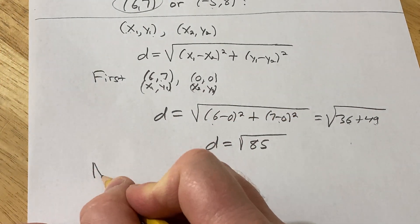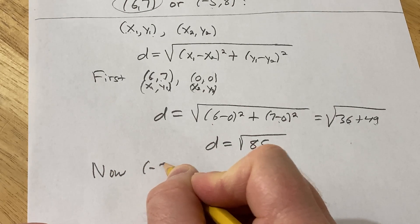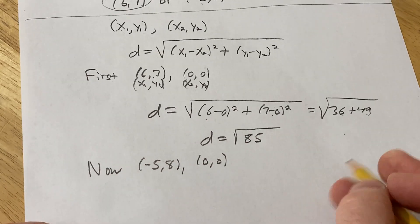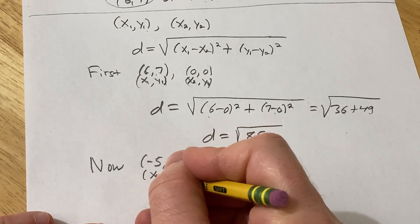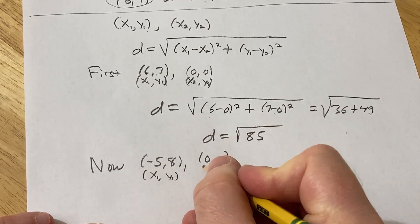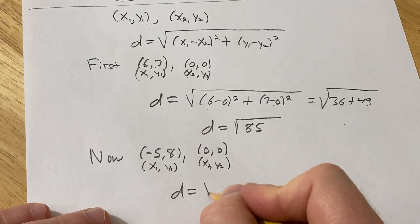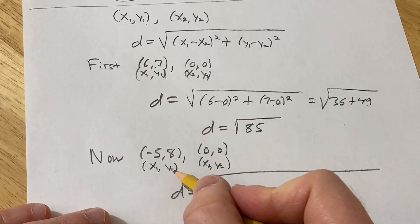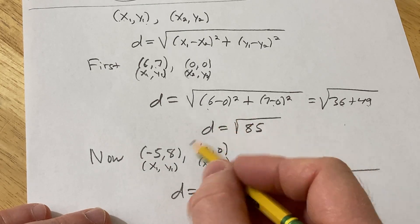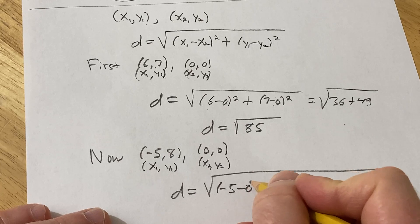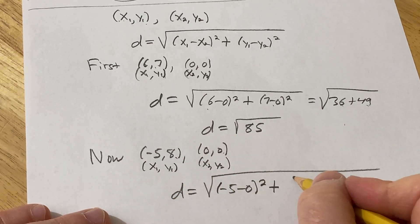Now let's do negative 5, 8, and 0, 0. So again, using the distance formula, this is our x1, y1. This is our x2, y2, so d is equal to the square root of, so we subtract the x's, so it'll be negative 5 minus 0, squared plus 8 minus 0, squared.